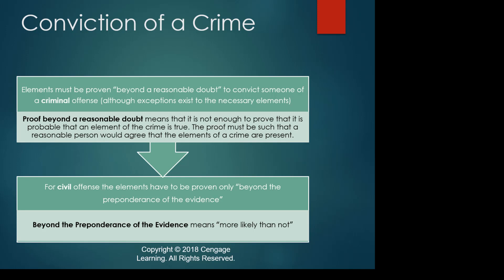If I'm the prosecutor, I have to prove the breaking, the entering, that I had the intent to commit a larceny inside, and that it was a dwelling house — in order for it to be a burglary. If I can't prove each and every one of those elements, perhaps some other crime occurred. In a criminal trial, I must prove each element beyond a reasonable doubt. In a civil trial, there is a lower level of proof necessary because the stakes are less serious — criminal conviction means prison, civil conviction usually means a fine or injunction.